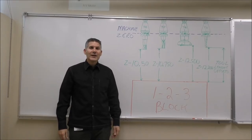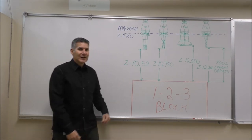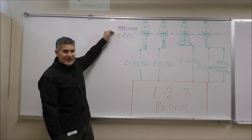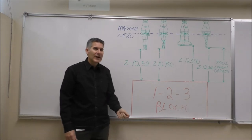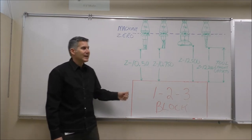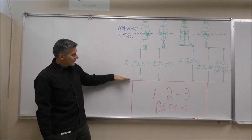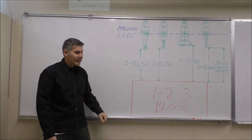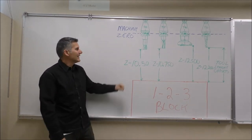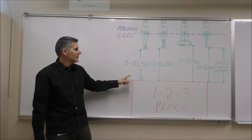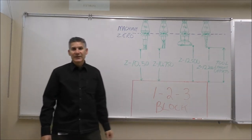Here at the whiteboard, we'll look at setting the tool length offsets. You can see they're in the machine zero position. What we're going to do when we record the tool length offsets is we're recording from the machine zero position to the top of our 1-2-3 blocks. We'll be moving the spindle down in the negative Z direction, so all of our offsets will be negative numbers.